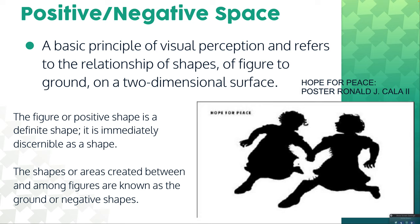Talking about positive-negative space - you'll hear me harp on this all semester. It basically refers to the relationships of shapes of a figure to a ground on a two-dimensional surface. The figure or positive shape is a more definite shape and is generally immediately recognizable as that shape. The shapes or areas in between or amongst the figures are the ground or the negative shapes. As we have here in our 'hope for peace' illustration, we have two children holding hands, and in between their bodies and hands we have this peace dove in the negative space - a wing here, a wing here, a head, body, and tail.